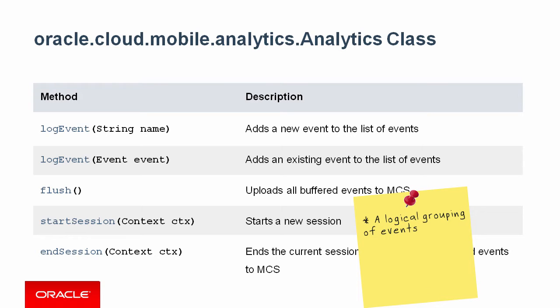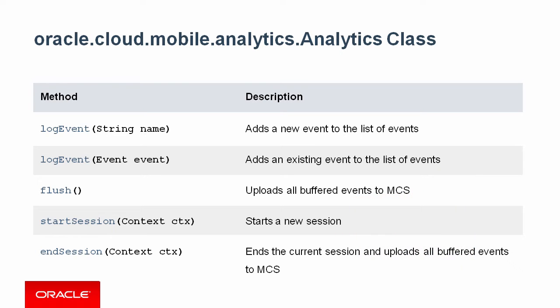A session is simply a logical grouping of events organized to capture a user's typical interaction with the app. For example, you could start the session when the app starts or when the user logs in, and end the session when the user logs out or quits the app. To begin collecting event data, you need to either start a new session by calling startSession, or call the logEvent method, which starts the session automatically if one does not already exist. All events are stored locally in a JSON file until the application calls either the flush or endSession method to upload all buffered events to MCS. If the app is offline, it will post the events later when it's able. For long-running sessions, it's a good idea to call flush periodically to keep the server up-to-date and to reduce the post payload size.